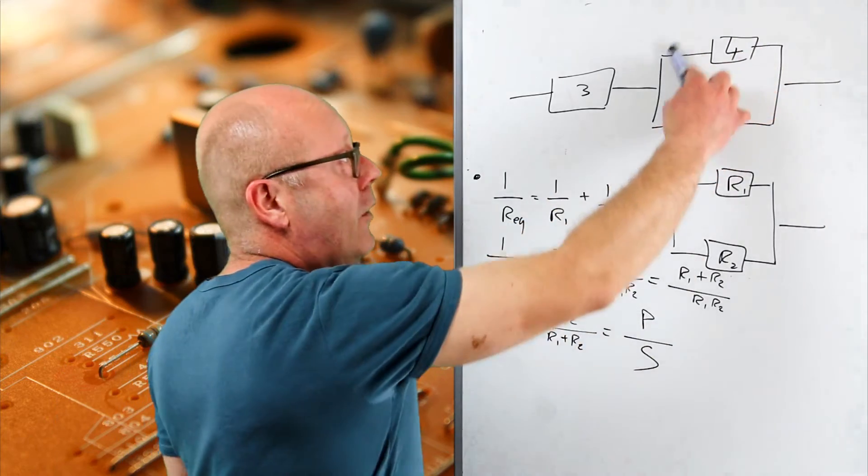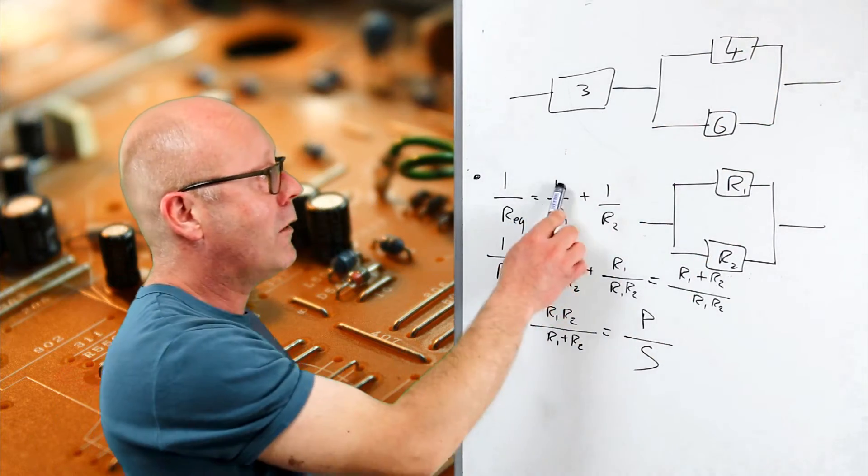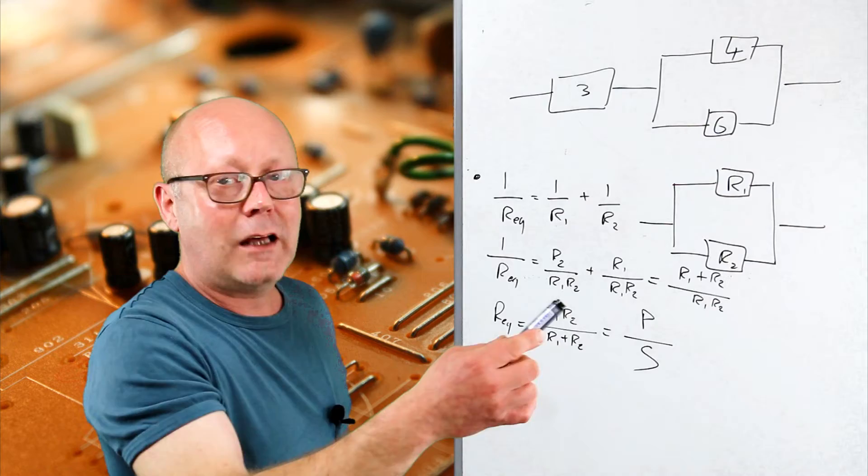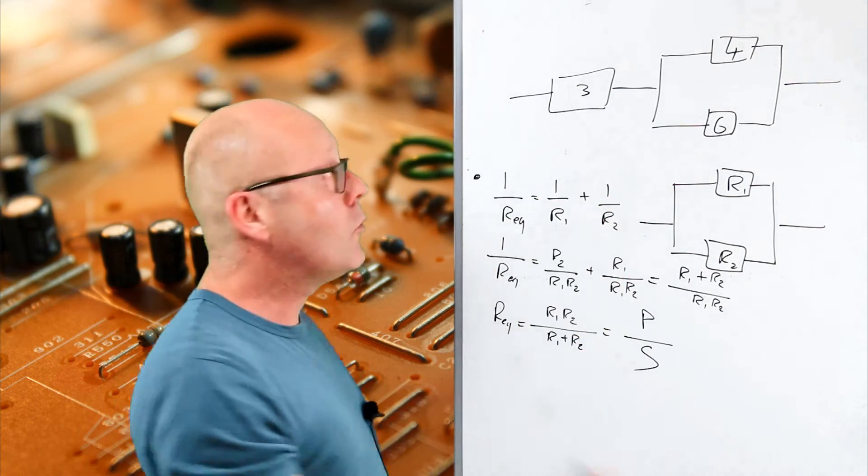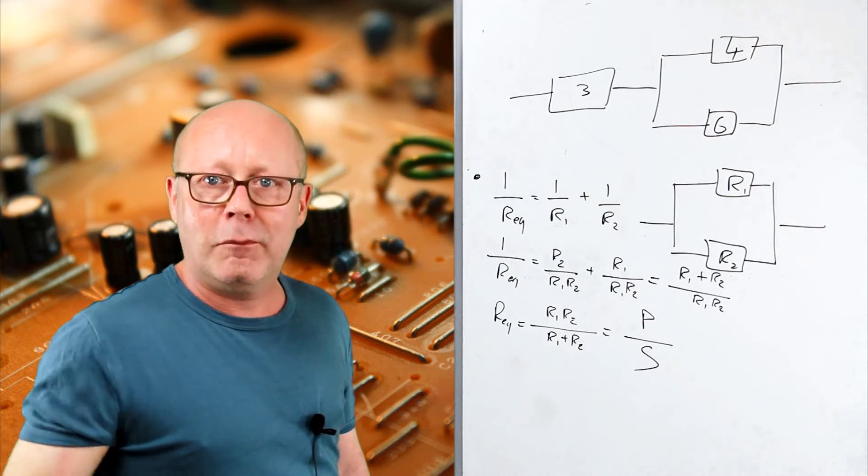So normally you would find first the equivalent resistance of this, so 1 fourth plus 1 sixth. Sum this, then flip. And then with this value, you would need to add it to 3. So there's many operations.